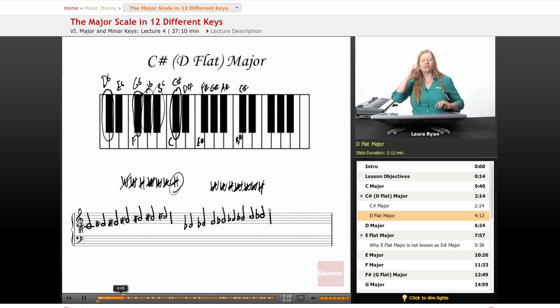So we have two ways of looking at the scale. We have every note sharped, and we have flat, flat, normal, flat, flat, flat, normal. I think this is a little easier to look at and think about. Generally when I have a scale starting on that note, I go with D flat major. Let's call up the keyboard and think about it both ways.